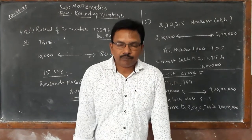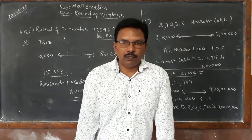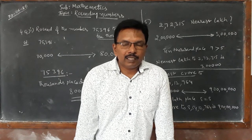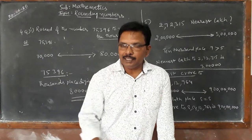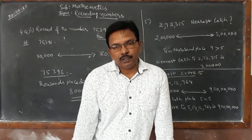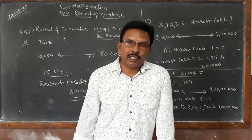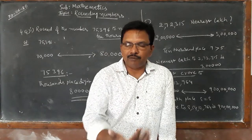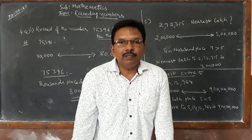Why do we always compare the next digit with five when rounding? To know whether the number is more than half or less than half. For example, for the lakhs place, the next place is the ten-thousands place. Half of one lakh is fifty thousand. If the ten-thousands digit is more than five, the number is more than fifty thousand — so we round up to the next lakh. If it is less than five, the number is less than fifty thousand — so we keep the previous lakh.